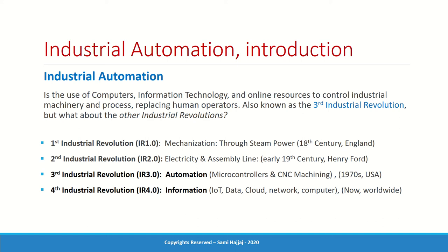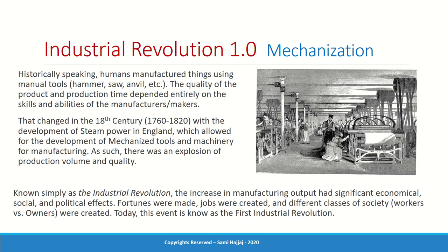There have been three earlier industrial revolutions. The first industrial revolution — historically just called the Industrial Revolution — happened in the 18th century. It came about with the development of steam power in England, around 1760 to 1820. Before that, manufacturing was manual: hammer, saw, anvil, and basically human muscles.